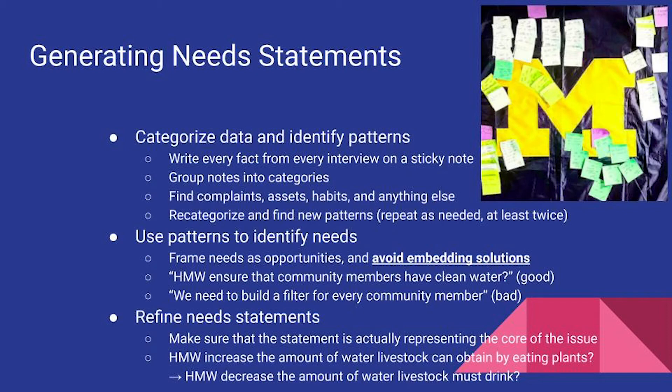For example, 'how might we increase the amount of water livestock can obtain by eating plants?' could be better represented as 'how might we decrease the amount of water livestock must drink?'